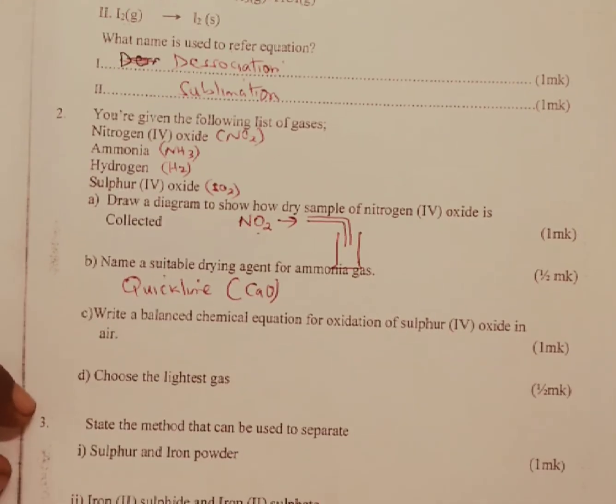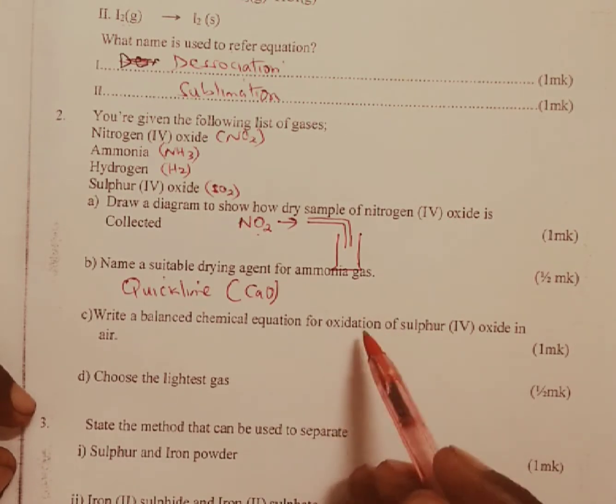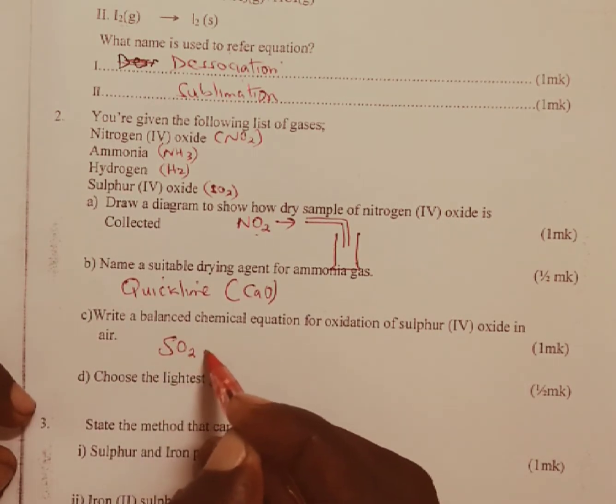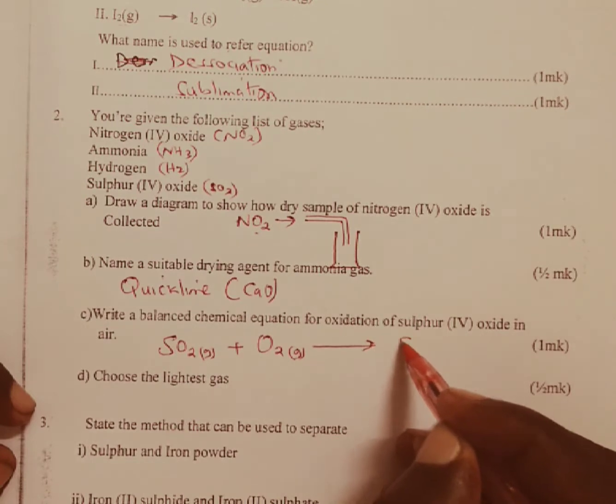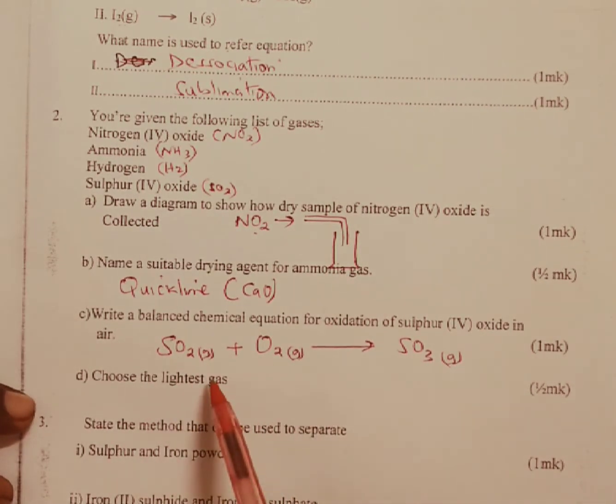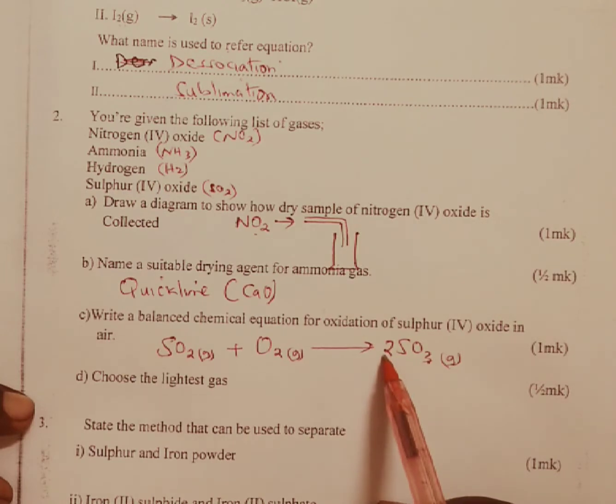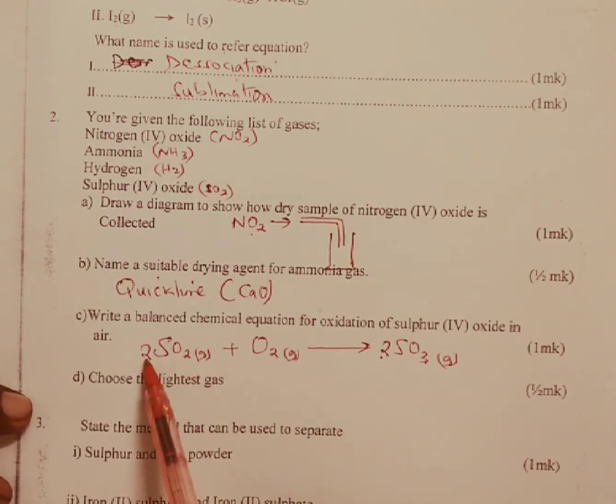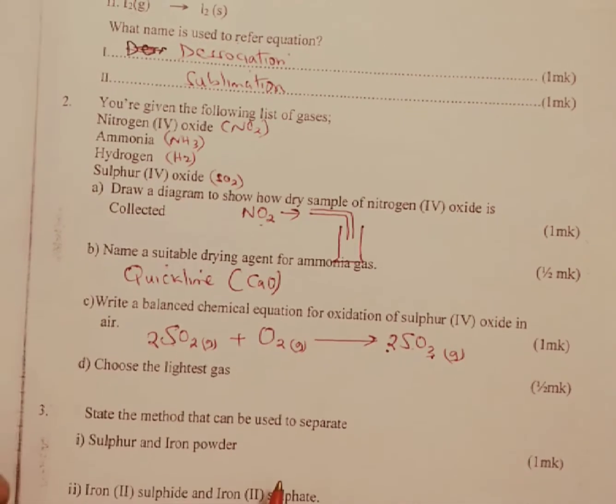Part C: write a balanced chemical equation for the oxidation of sulfur 4 oxide in air. Oxidation is the addition of oxygen to a substance. We have sulfur 4 oxide, SO2 gas, being burnt in air or oxidized to give us sulfur 6 oxide, SO3 gas. To balance the equation, we write 2 behind sulfur 6 oxide so that 3 oxygen times 2 gives us 6. Then we write 2 behind sulfur 4 oxide. We will have 2 sulfur, and oxygen will be 2 times 2 which is 4 plus 2 giving us 6. Hence the equation is balanced: 2SO2(g) + O2(g) → 2SO3(g).